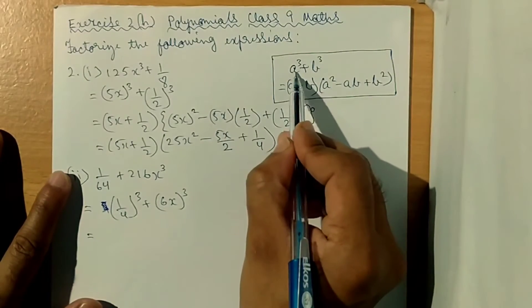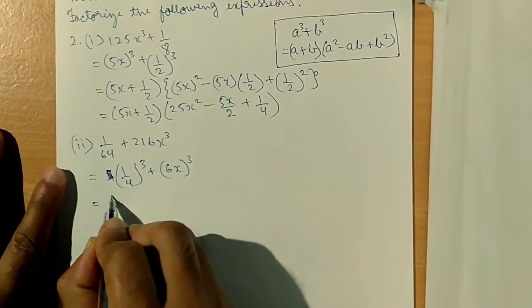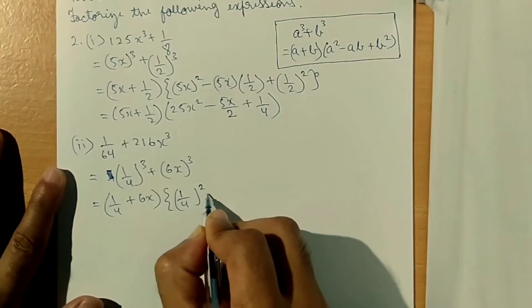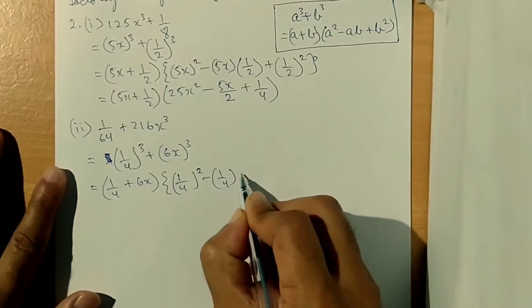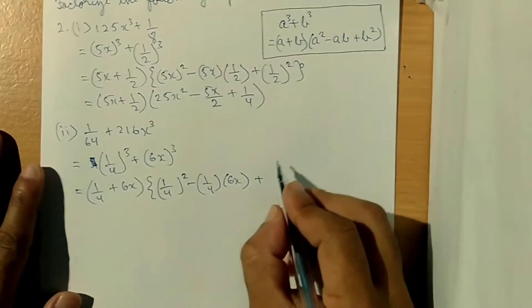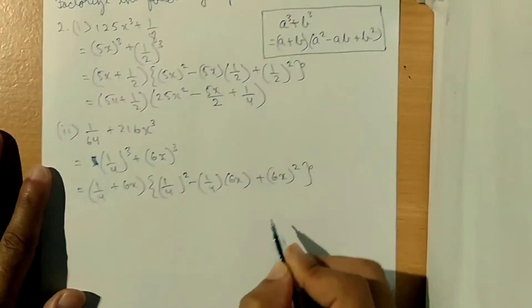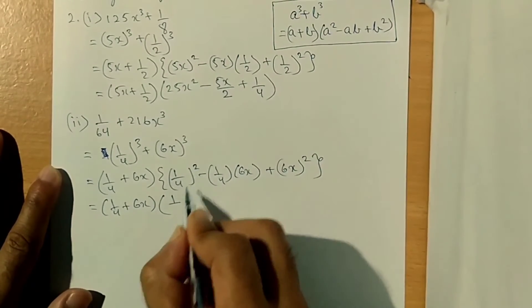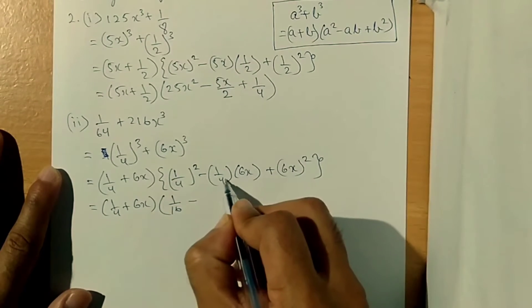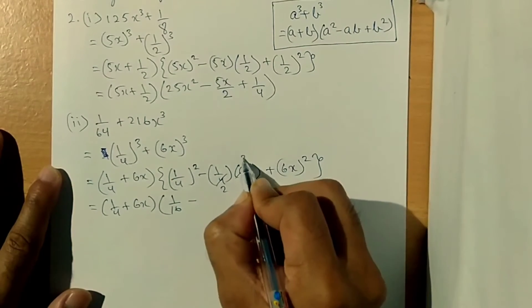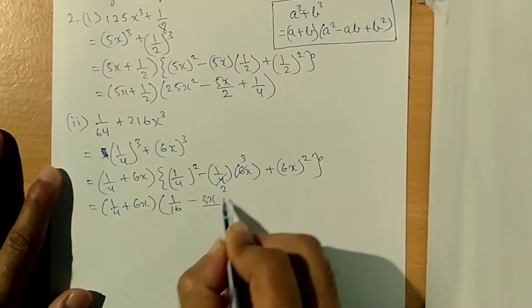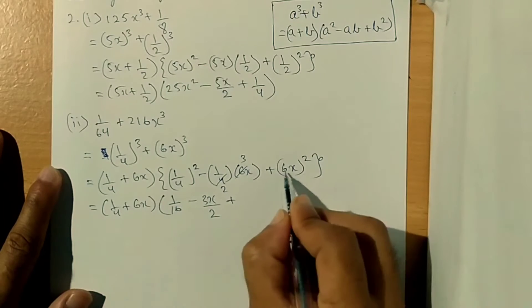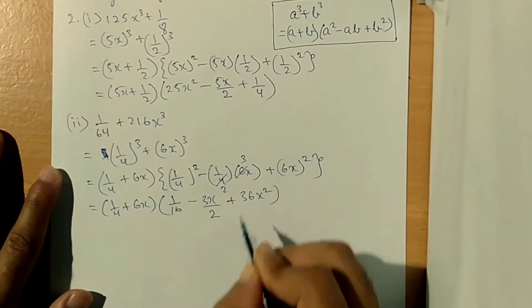So by using the a cube plus b cube formula, I will write: 1 by 4 plus 6x, into 1 by 4 square minus 1 by 4 into 6x plus 6x square. This equals 1 by 4 plus 6x, into 1 by 16 minus 3x by 2 plus 36x square. So this is the answer.